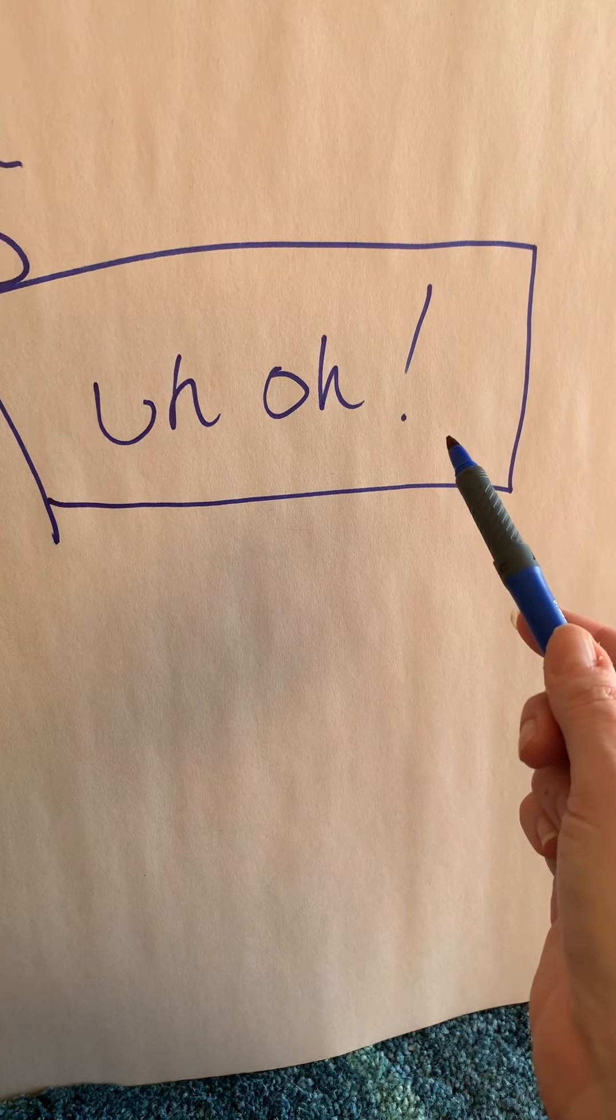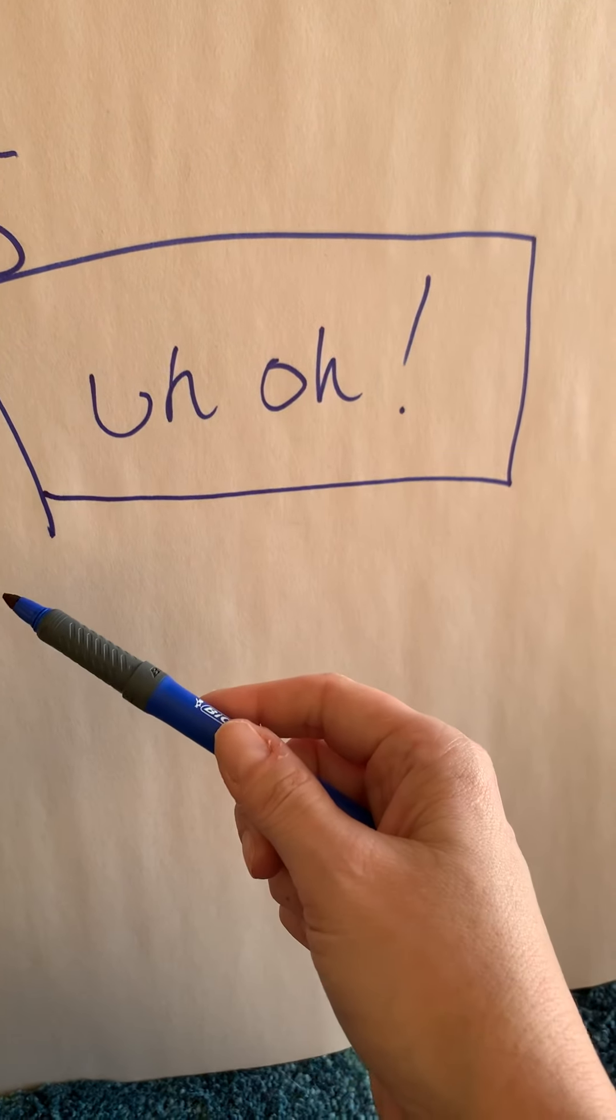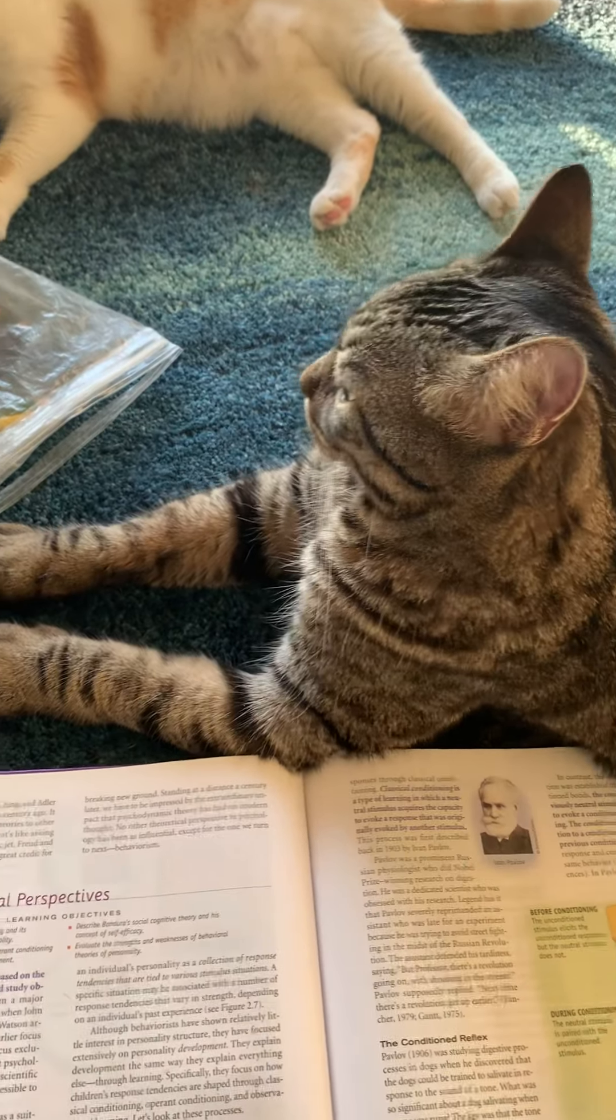Then he knew, like Pavlov's dog, if he said uh-oh, treats would happen. So that's how we taught Wesley how to say uh-oh.